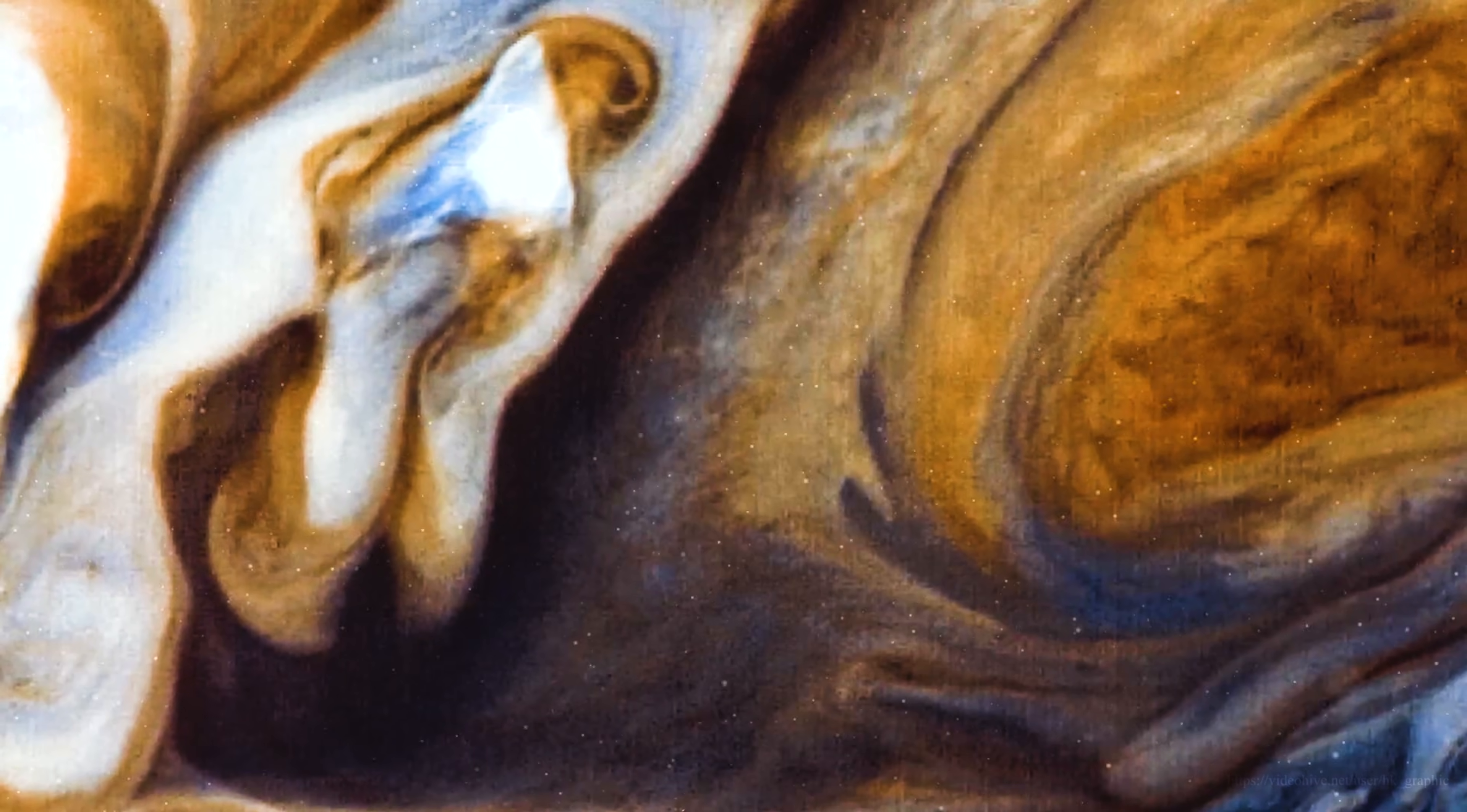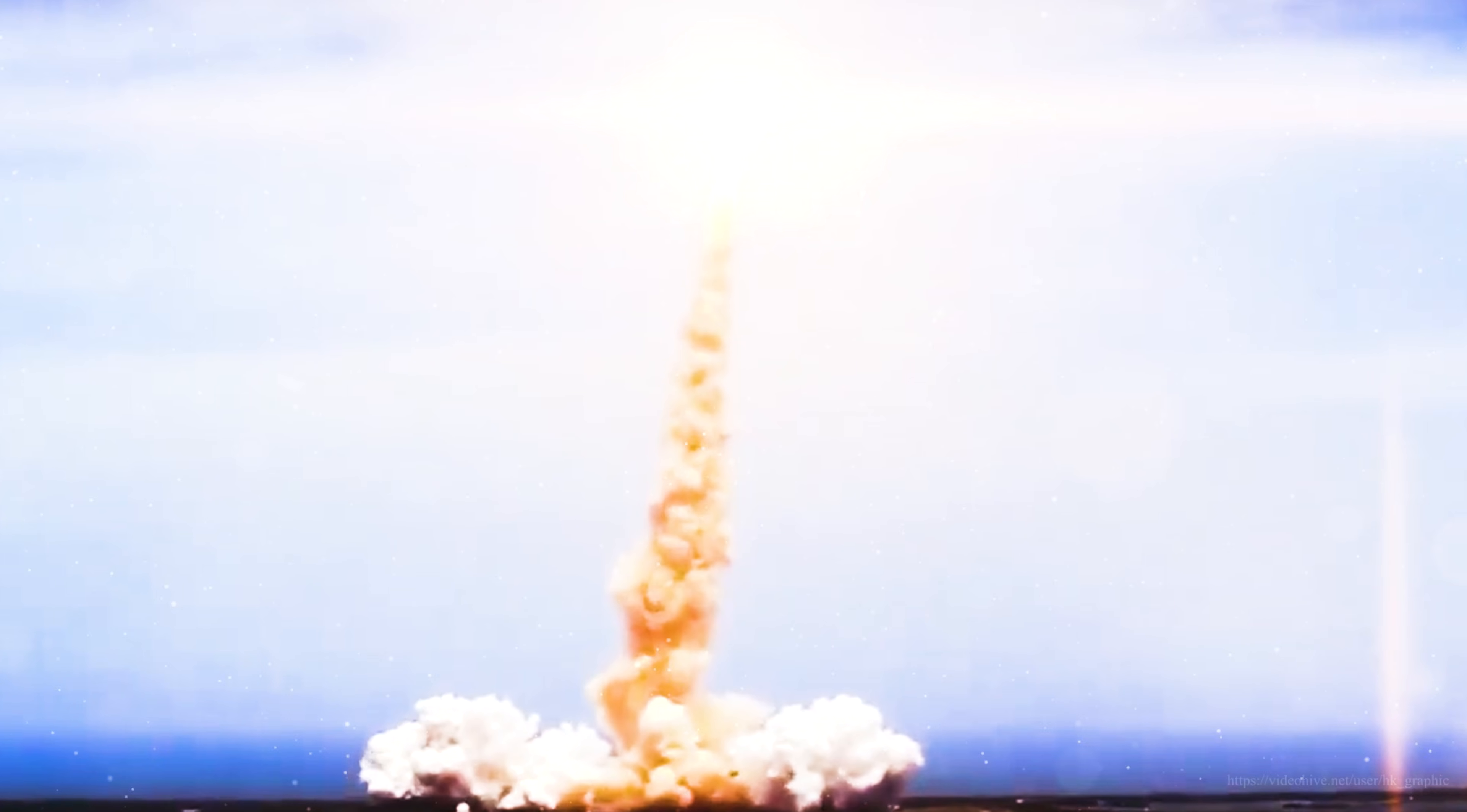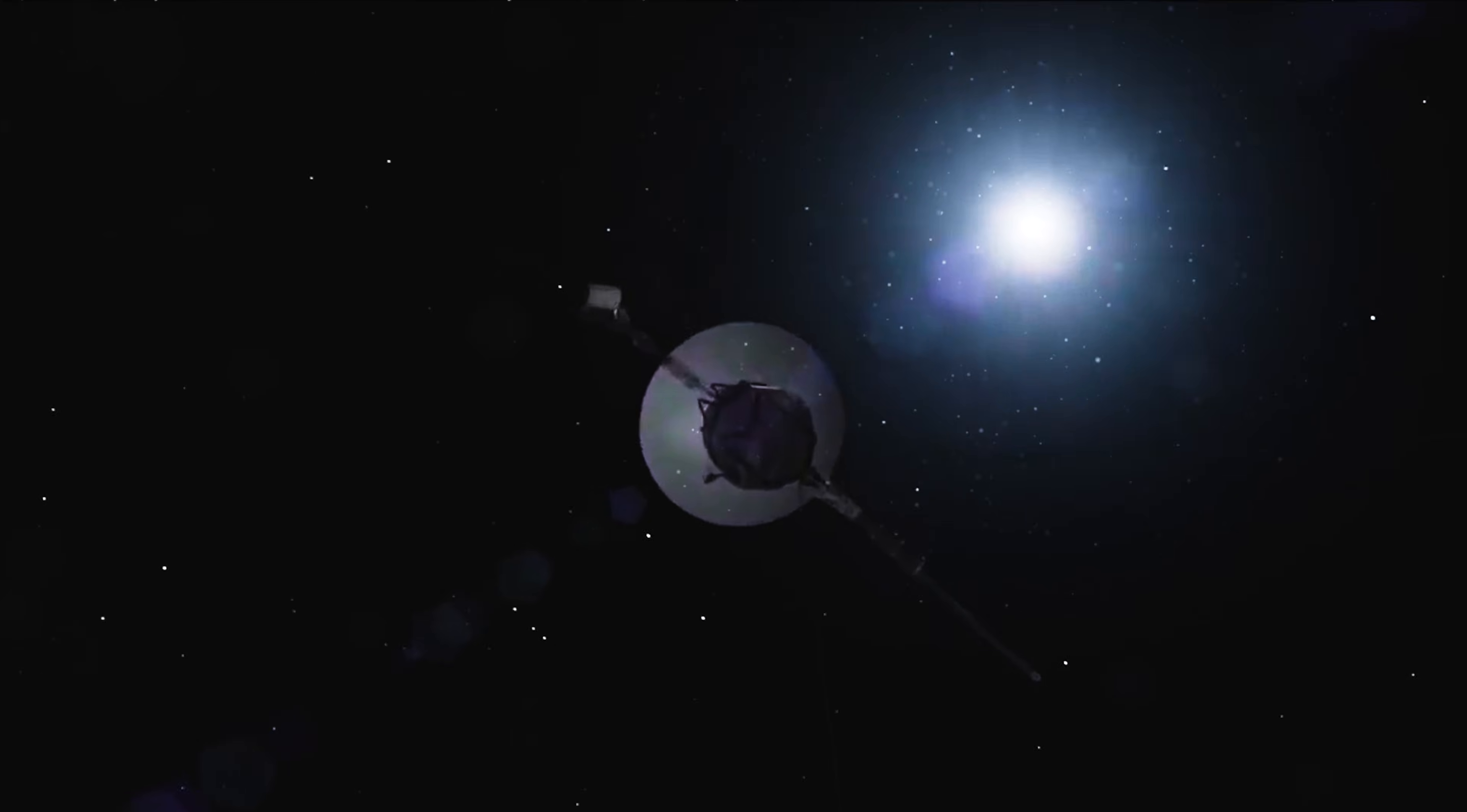The journey begins nearly half a century ago. In 1977, NASA launched Voyager 1 and Voyager 2, two spacecraft built for a mission that was never meant to last. They were engineered to visit the giant planets, snap a few once-in-a-lifetime pictures, and then quietly drift into the darkness, outliving their purpose within a decade.